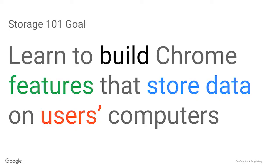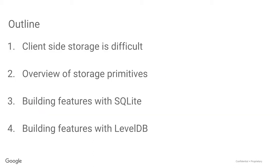Today I want to talk to you about building Chrome features that store data on users' devices. The first thing I'm going to do is convince you that it's worth paying attention to this talk — what difficult problems we're going to tackle and why this isn't super easy, even though you've learned to read and write files in school. Then we're going to go over the storage primitives we use to build features on top of, and I'll give you details about two important primitives: SQLite and LevelDB. This is going to be very technical — we're going to have code and get a first pass at understanding it.